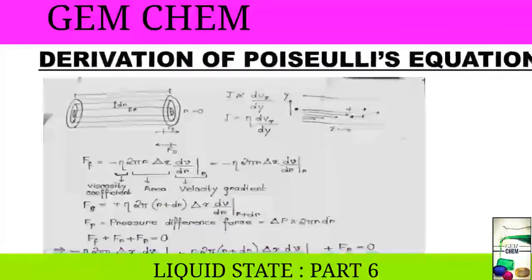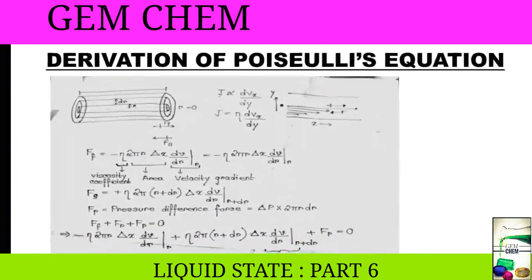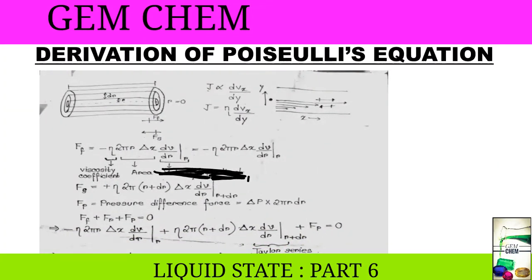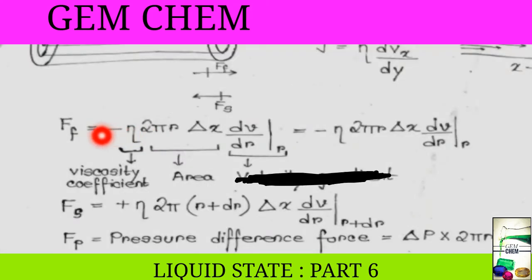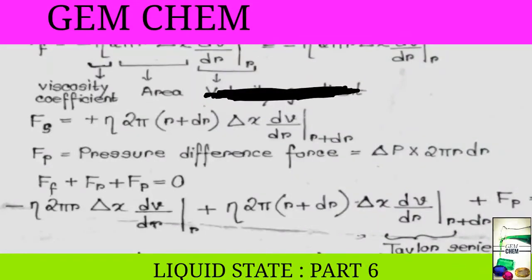Now, this part, this difference which we have taken is taken to be as delta x. Now, Ff is written as minus eta 2 pi r delta x dV by dr. Now, this is viscosity coefficient, this is area, and this is volume divided by the length, that is the small radius. Dr is infinitesimally small.